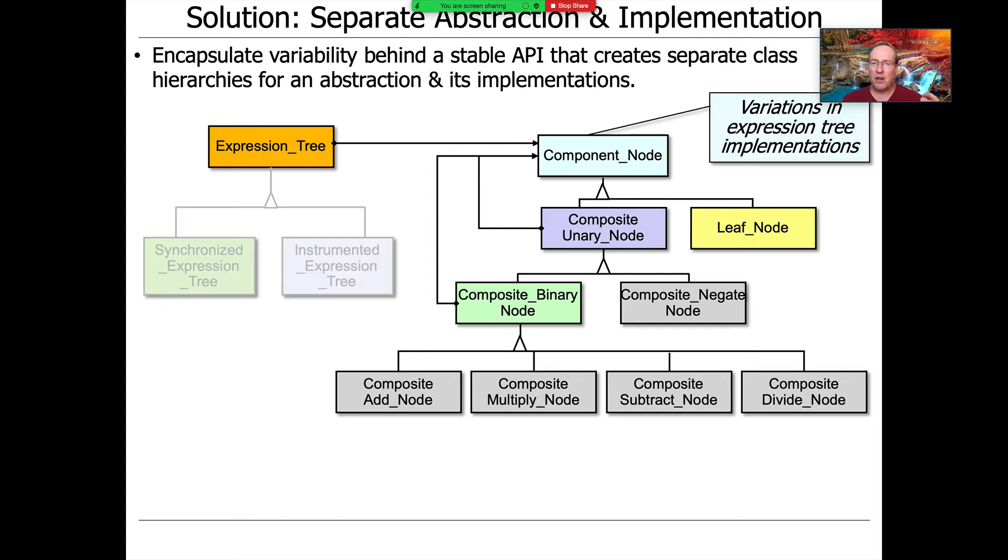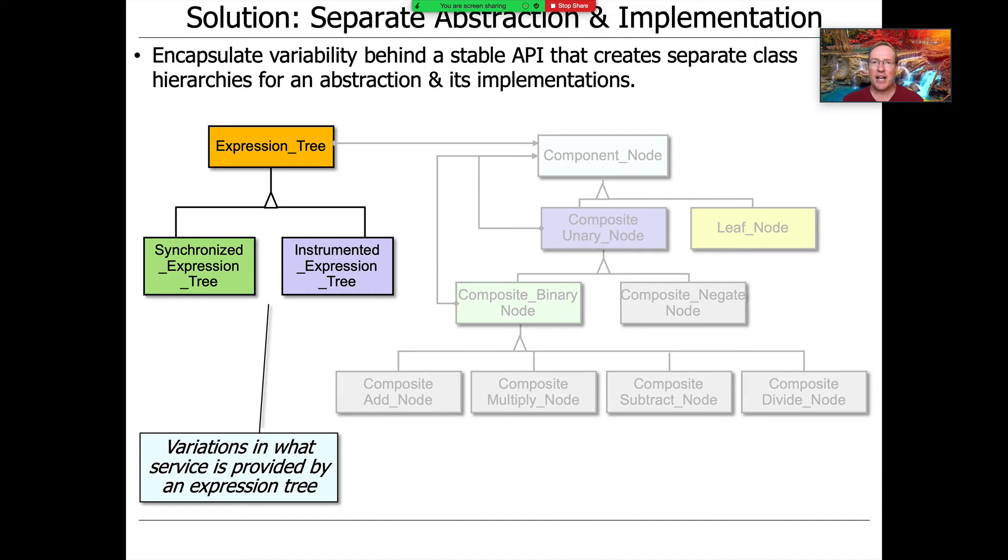We want to be able to have variation in expression tree implementations—one approach using the composite, one approach using a different model—and we want variations in the service or services provided by an expression tree. If we can pull this off, we've reached the holy grail of extensible software that's got a common interface that can be extended without breaking what's already there.